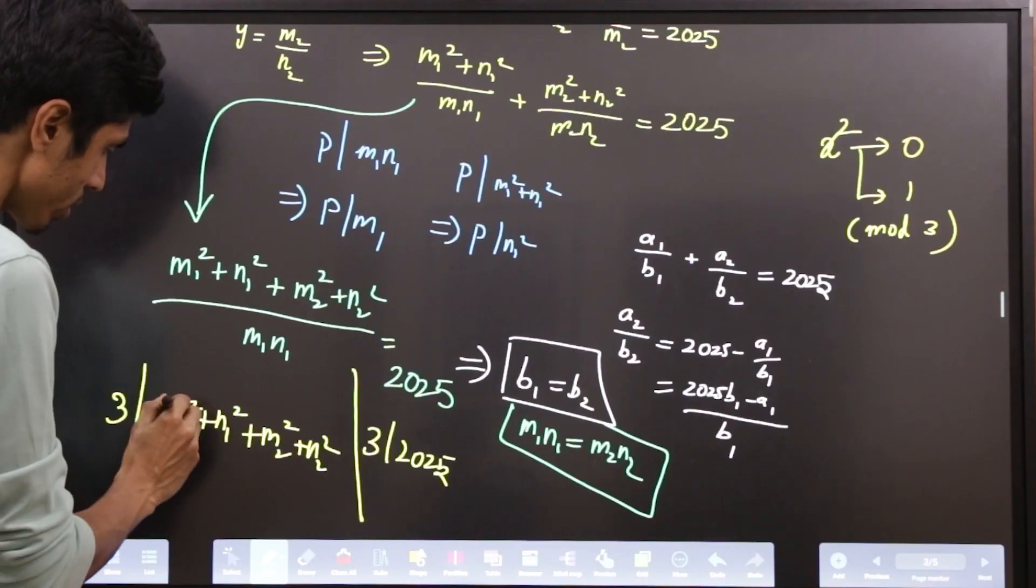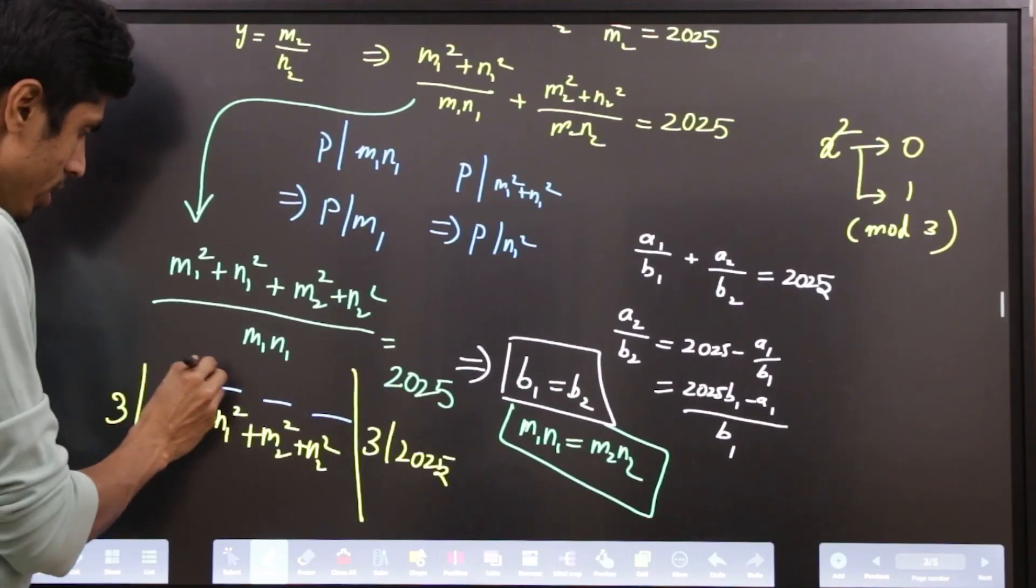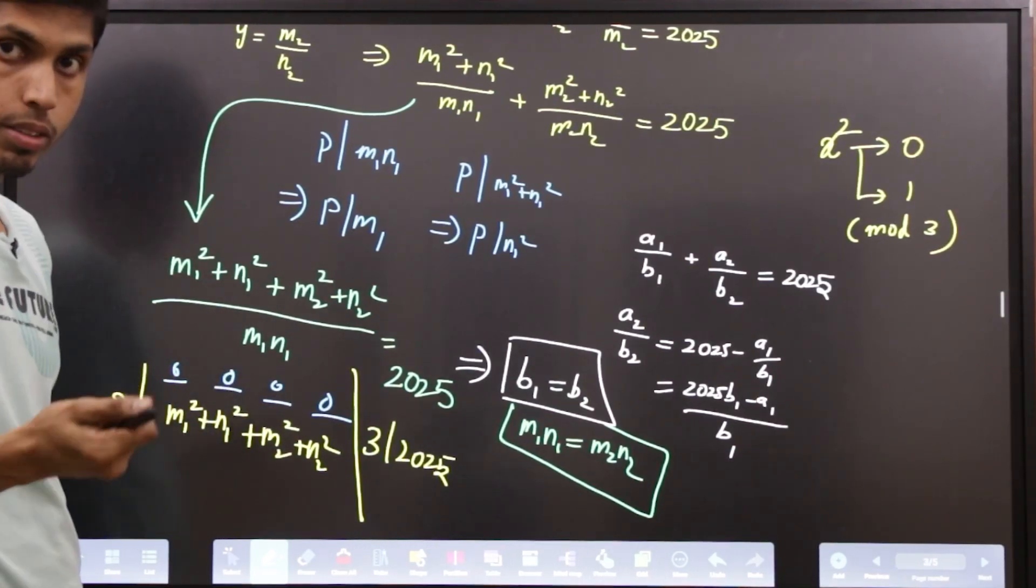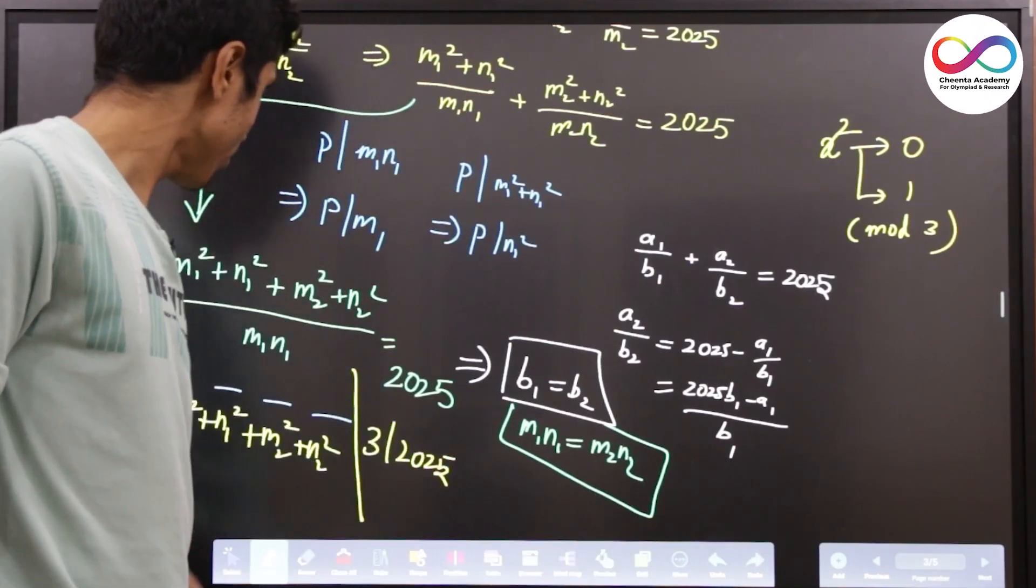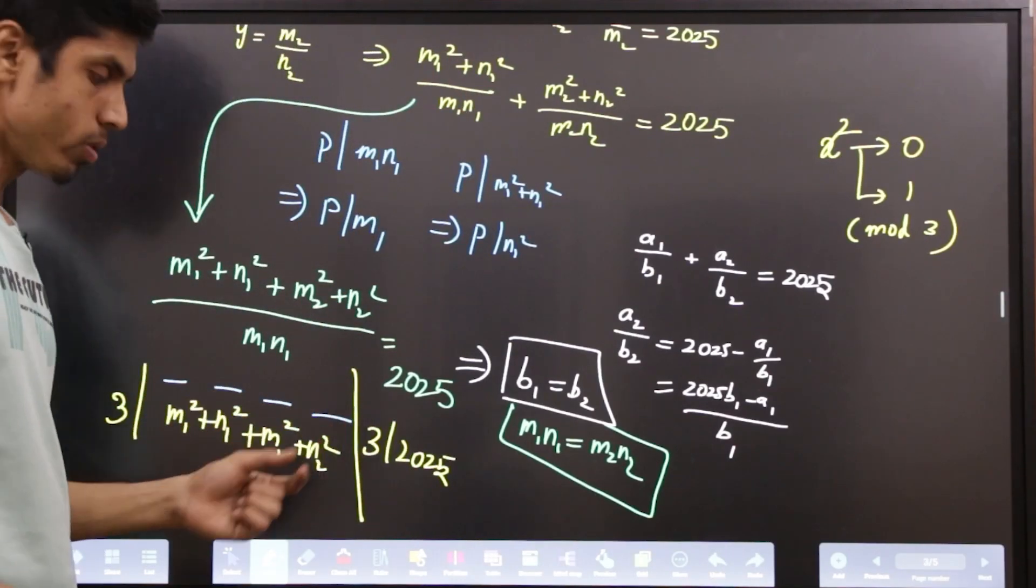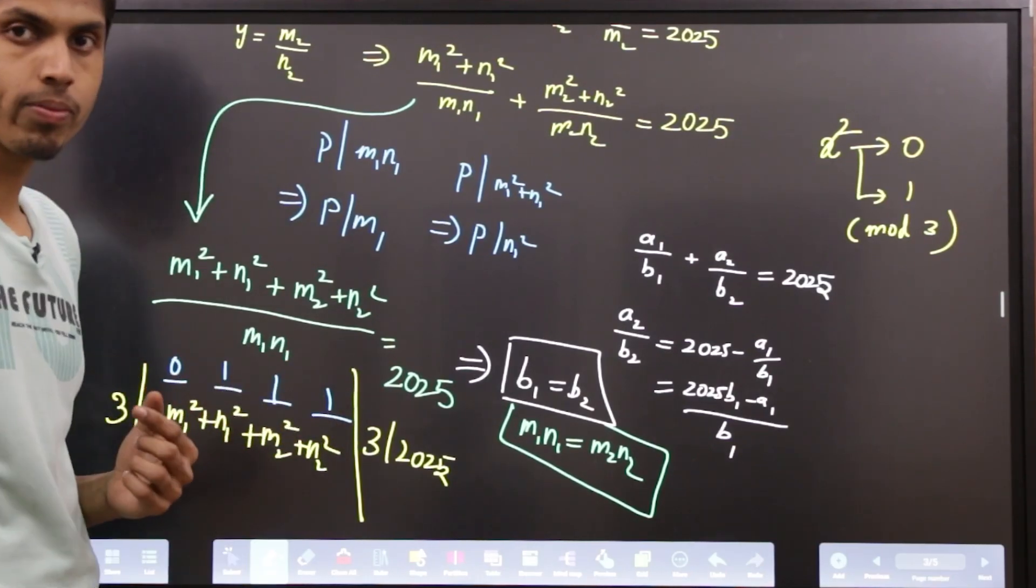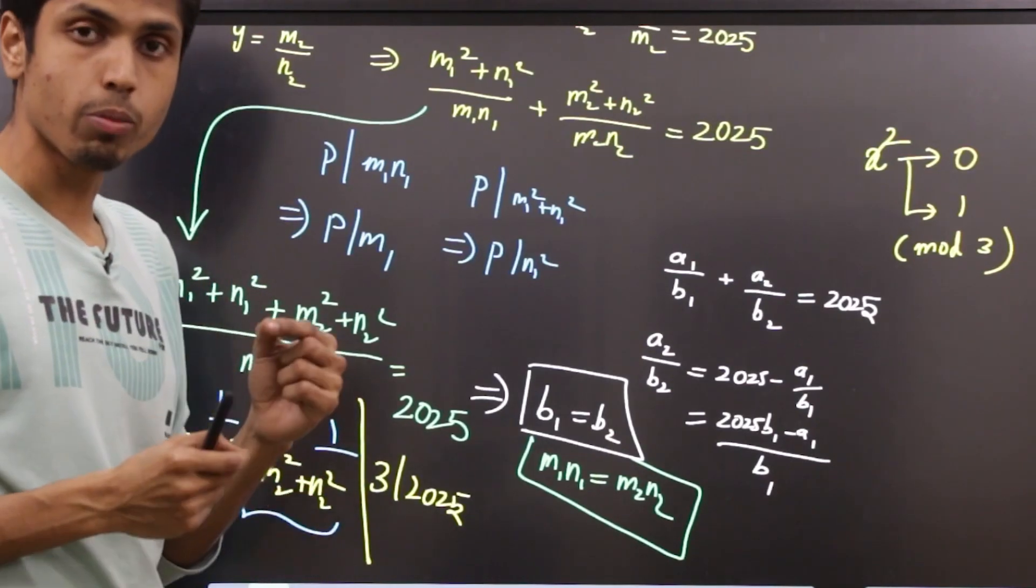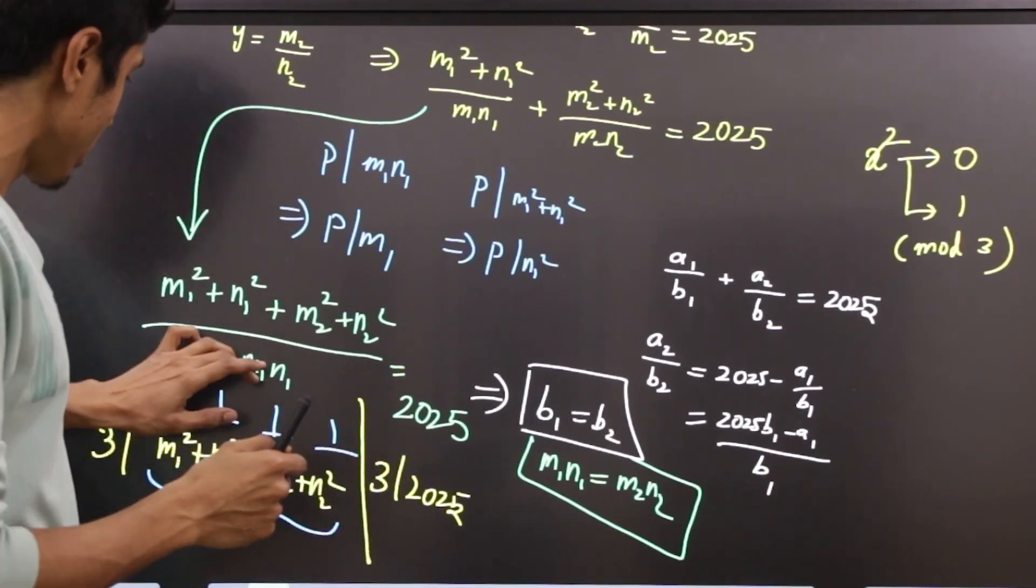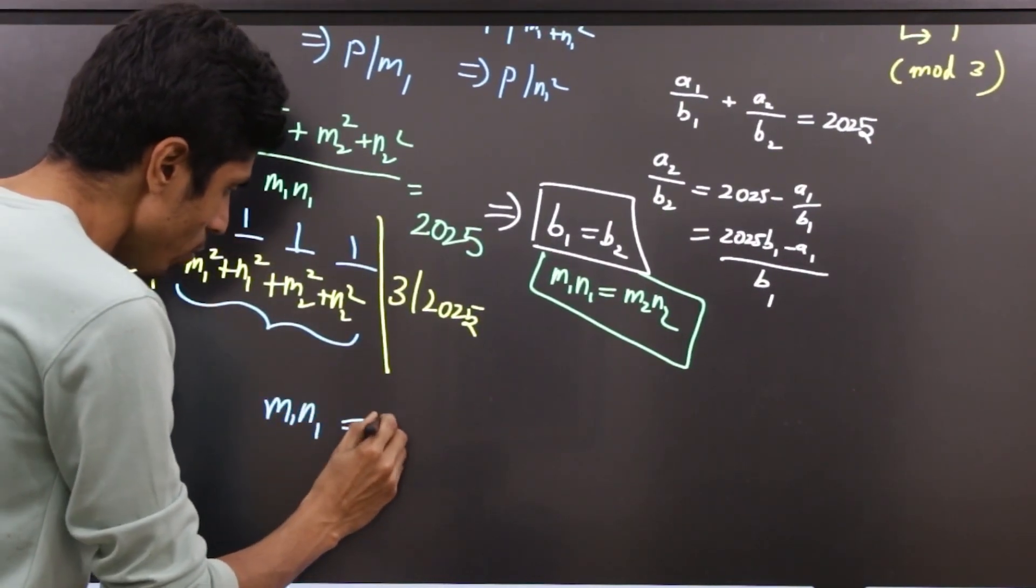You can now think about the remainders of each of these numbers. What could be the possible remainders? Can it be 0, 0, 0, 0? Never, because m1 and n1 are coprime in our assumption. Alright, if they are all not 0, some of them must be 1. And since 3 divides it, we must have at least 3 ones. And what does that mean? This means that exactly one of these 4 must be a multiple of 3. And that cannot happen.